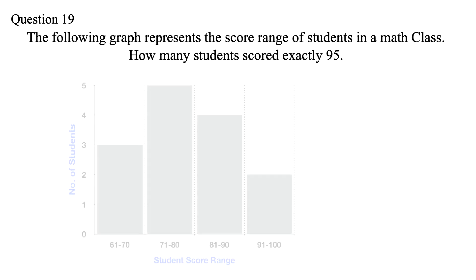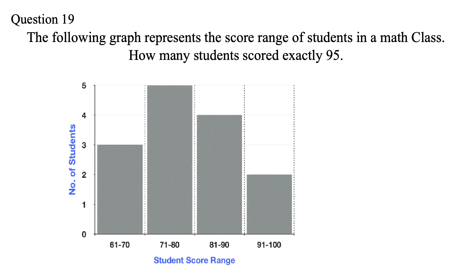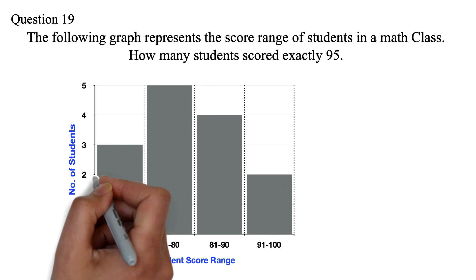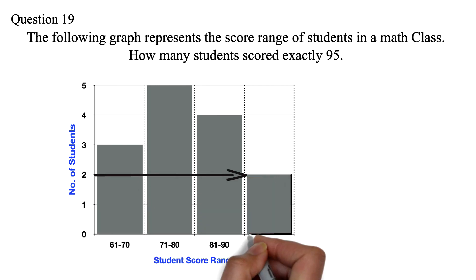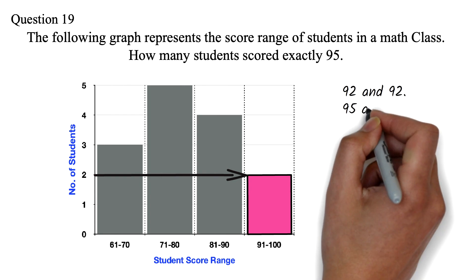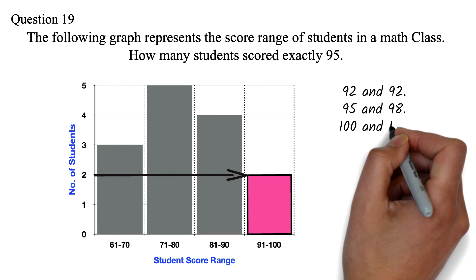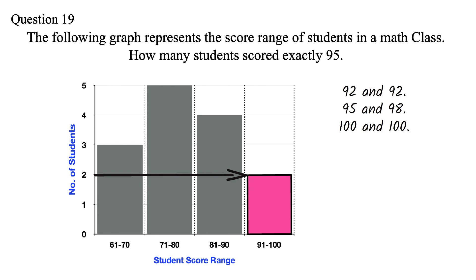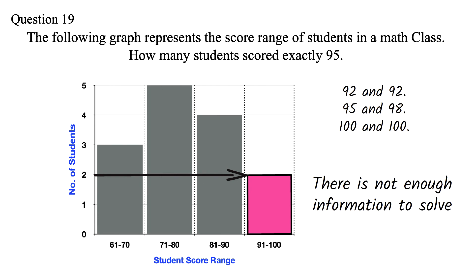Question 19: Using the same graph, how many students scored exactly 95? This is a trick question. Most students assume the answer is 2, since 95 is within the range 91 to 100. But a range doesn't tell you the exact values within it — the two students could have scored 92 and 92, or 95 and 98, or 100 and 100, or any two numbers between 91 and 100. So the answer is there is not enough data to answer the question.